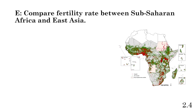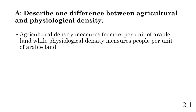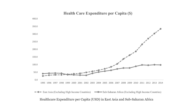Part E: compare fertility rates between Sub-Saharan Africa and East Asia. When you see compare prompts, you'll know right away whether you're giving similarities or differences. Here, we're stating a difference. Looking at the graph, East Asia has higher healthcare expenditures, meaning more advanced and accessible healthcare facilities. In countries with better healthcare systems, we typically see lower fertility rates and lower birth rates, because infant mortality is lower, maternal mortality is lower, and there's access to contraception and family planning services.